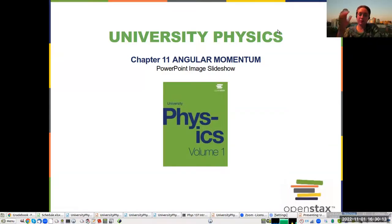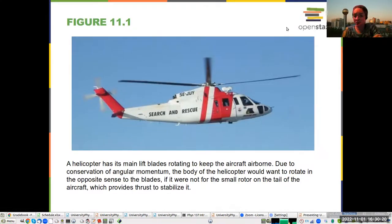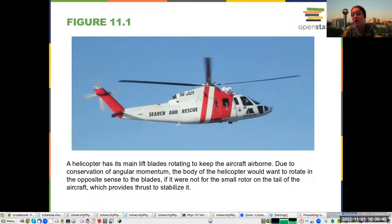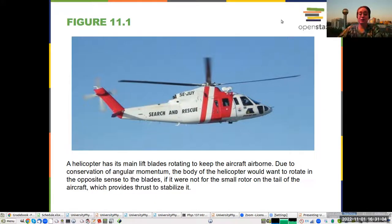Now we're going to talk a little bit more about rotation, introducing the concept of angular momentum. Examples of applications of angular momentum conservation explain a lot of phenomena. Here you can see a picture of a helicopter. The helicopter — angular momentum is the rotational analog of linear momentum. By default, the helicopter would want to rotate because its propeller is rotating, but it has a small rotor on the tail so that the whole helicopter does not begin rotating.